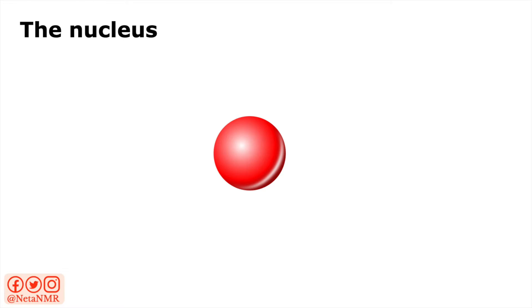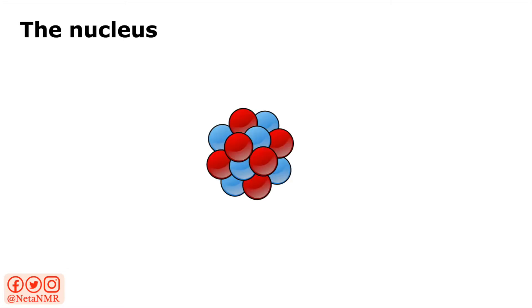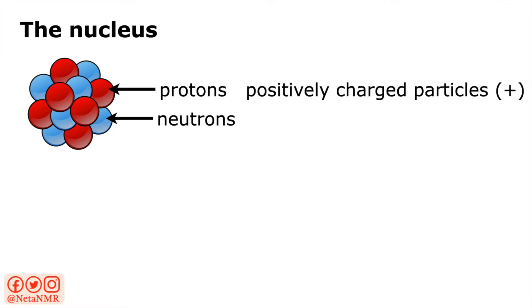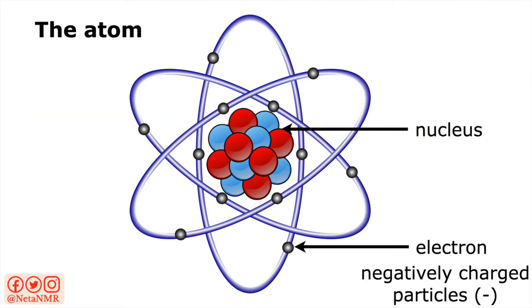Now let's have a look at the nucleus and see what it is made of. It is made up of two types of particles — shown here for demonstration purpose only as red particles and blue particles. These are called protons and neutrons. The protons are positively charged particles, and the neutrons are neutral particles. And remember that surrounding the nucleus were the electrons — these are negatively charged particles circling around the nucleus.